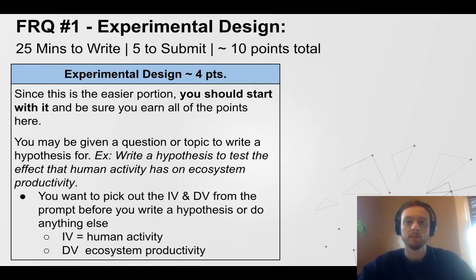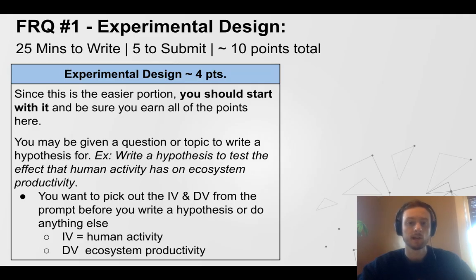FRQ number one is going to be covering experimental design in some way. It's going to be 25 minutes to write and five minutes to submit. The practice FRQs that have been put out look like there's going to be a full 10 points — a full-length FRQ about the same time we took to write them during class all year. The only new thing is that we have to copy and paste it over from a Word document. With experimental design, I would start here even if it's not the first part of the FRQ. I think this is the easiest and quickest part. Estimates look like it'll be about four to five points.